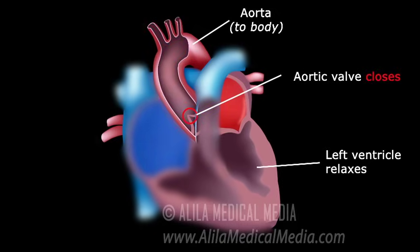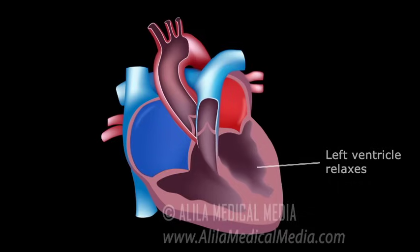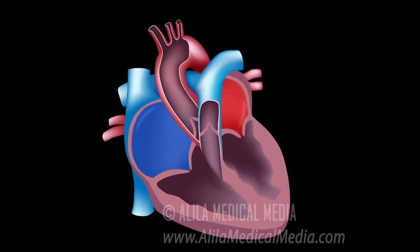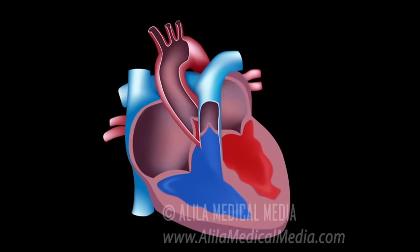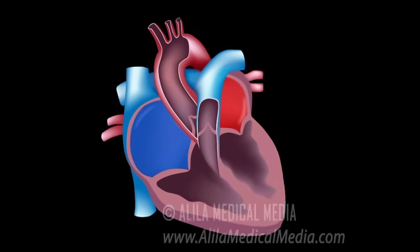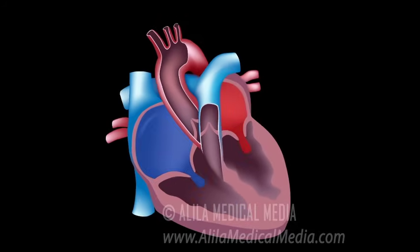The aortic valve quickly closes to prevent blood from flowing back to the heart. Meanwhile, the atria have filled with blood and the cycle repeats itself.